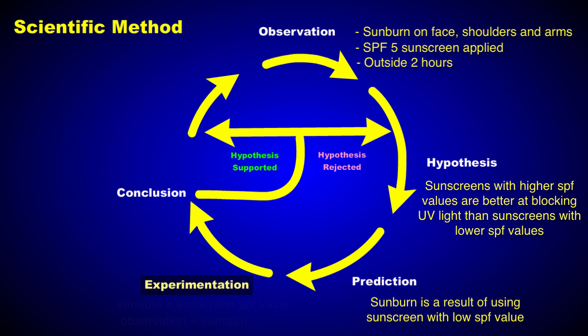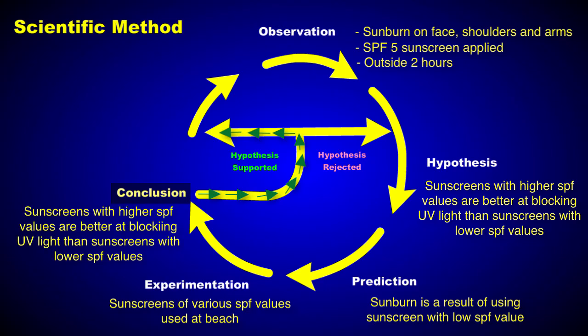You collect a variety of similar sunscreens with different SPF values and apply them to your arm. After two hours at the beach, you analyze the results of your experiment and reach a conclusion. Sunscreens with higher SPFs do indeed block more UV rays than sunscreens with lower SPFs.